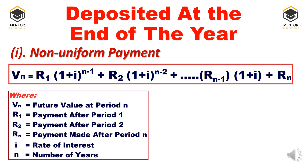Deposited at the end of the year — non-uniform payment. When it is a non-uniform payment, the formula for calculating Vn, the future value at the nth period, is: Vn = R1 × (1+i)^(n-1) + R2 × (1+i)^(n-2) + ... + Rn. Here Vn is the future value at the nth period, R1 is the payment after period 1, R2 is the payment after period 2, Rn is the payment after the nth period, i is the interest rate, and n is the number of years.